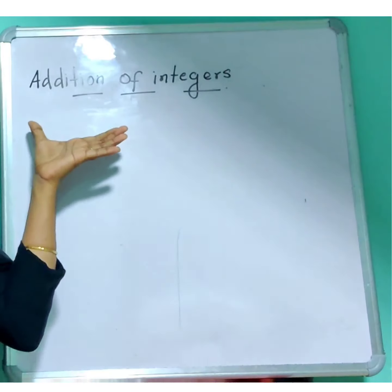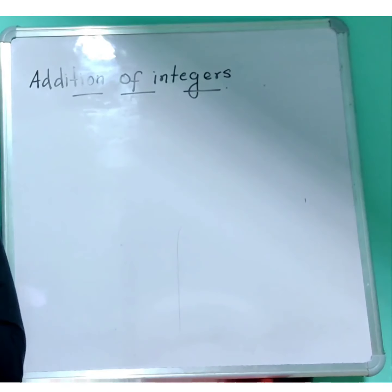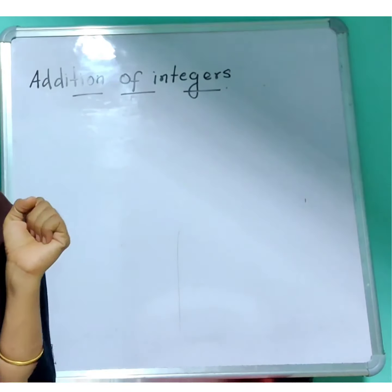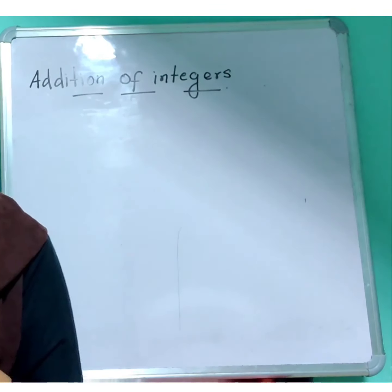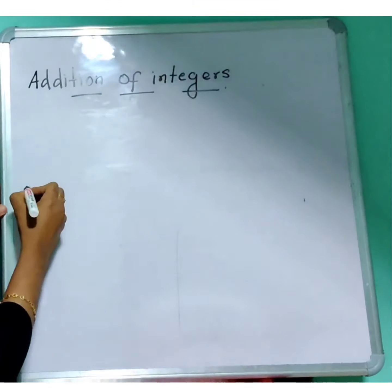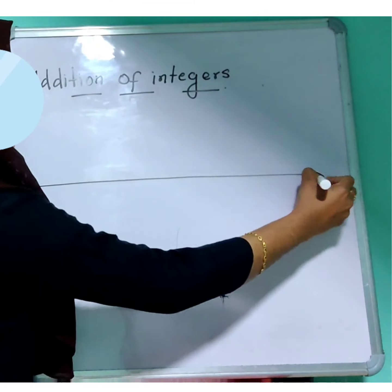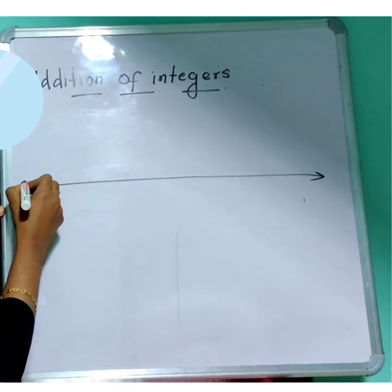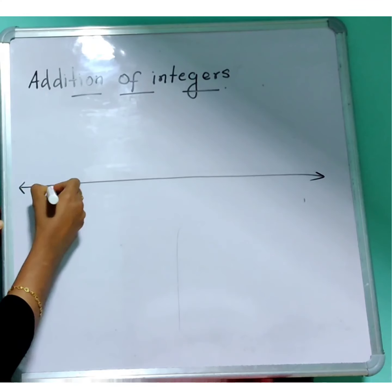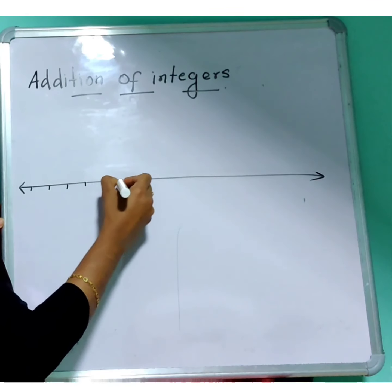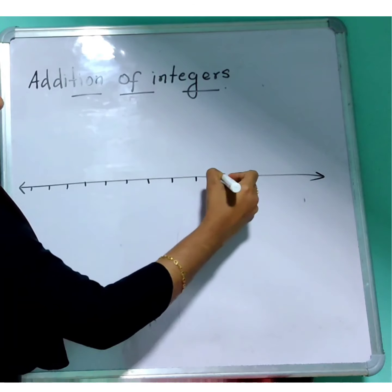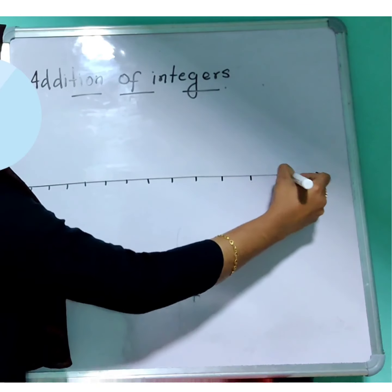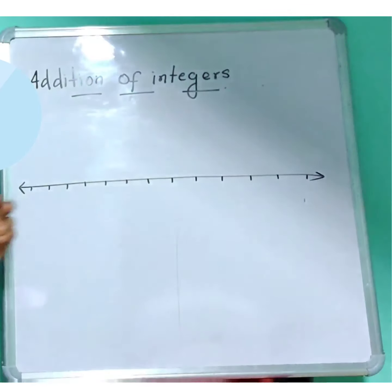Before studying addition of integers, let me ask you — do you all know what is meant by a number line? It is simply a line that consists of several numbers, both negative and positive integers.